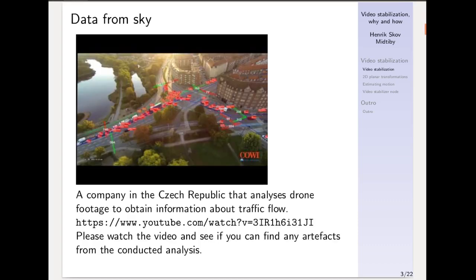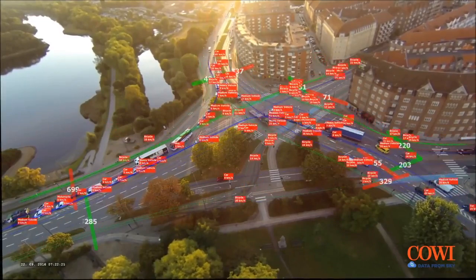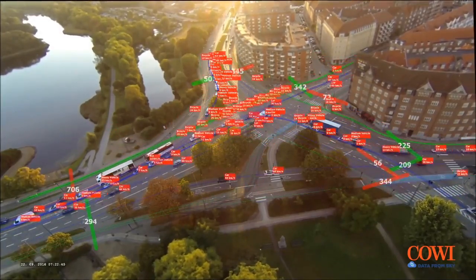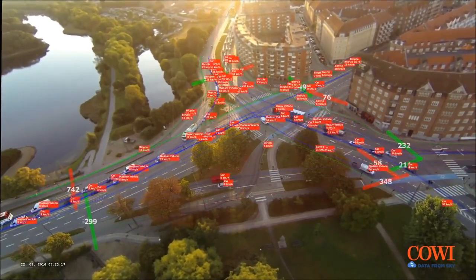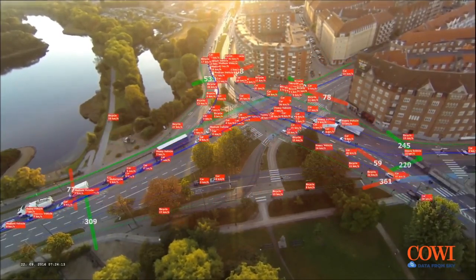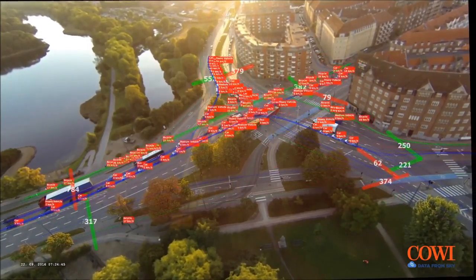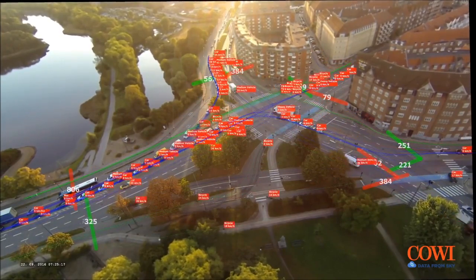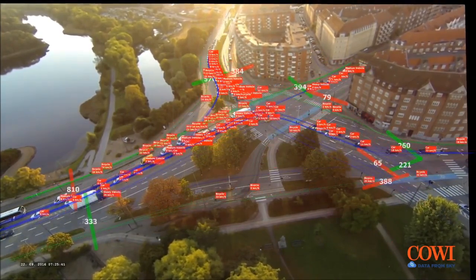The basic reason for doing video stabilization when analyzing images from a UAV is that it makes life much simpler in many cases. One example of what can be achieved by analyzing drone footage video is the following video that a company from the Czech Republic has analyzed from drone footage in Copenhagen of some kind of intersection. What you can see here is that the system is able to track individual cars and bicycles and so on inside this video.